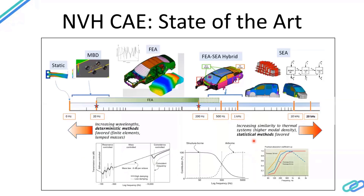This slide describes the different simulation methods we use according to frequency. It starts with static analysis at 0 hertz, looking only at stiffness without mass effects. At low frequency, up to about 20 hertz, we use multi-body dynamics (MBD) to address the kinematics of the system. From 20 to 200 hertz — the crucial zone that dictates the vehicle structure — we use FEA to obtain resonant responses and understand what we need to do to achieve a great vehicle design.